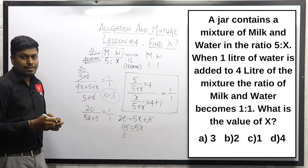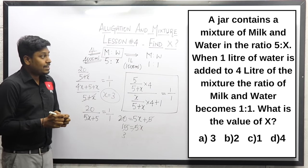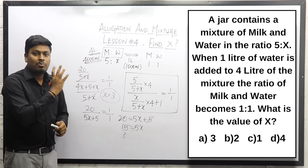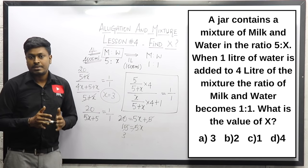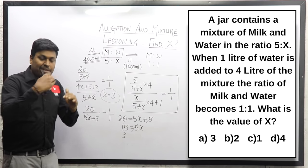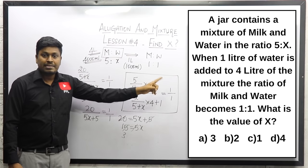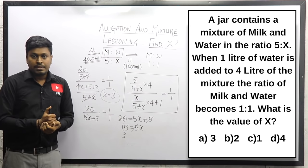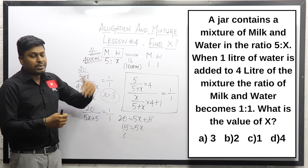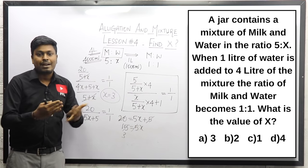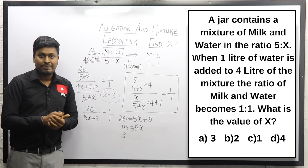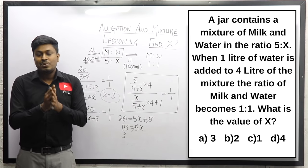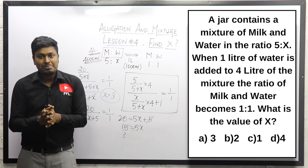Finally, the value of x is 3 for question number 2. In this lesson we solved only two questions, but both are the most important questions for competitive exams in the topic Allegation and Mixture — these types of questions are repeatedly asked. Thank you so much for watching. If you like it, share it with your friends who are preparing for competitive exams.